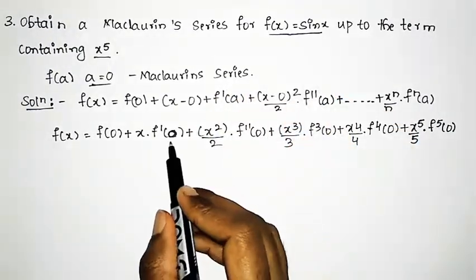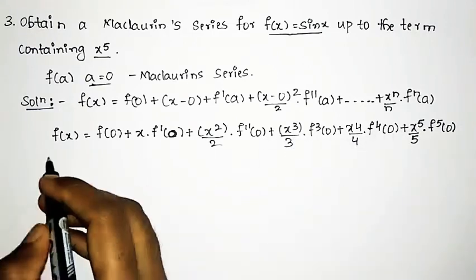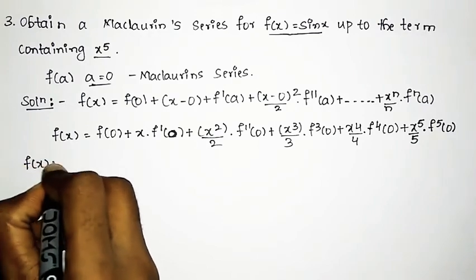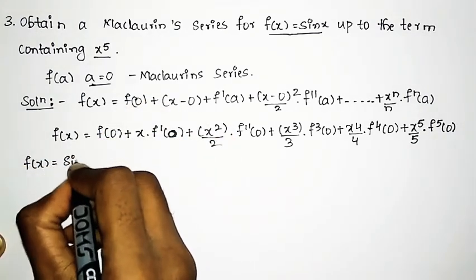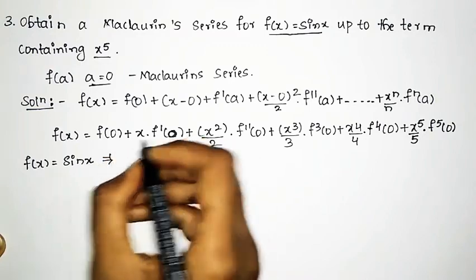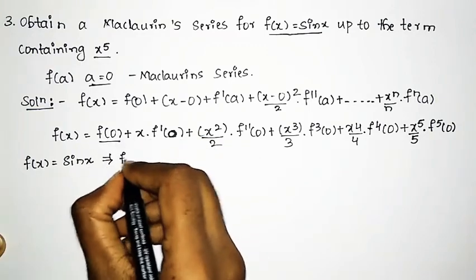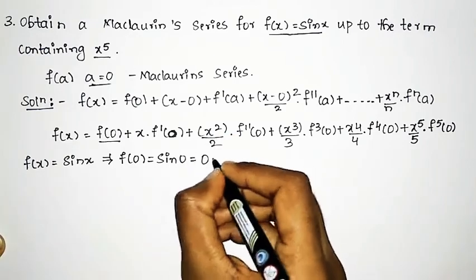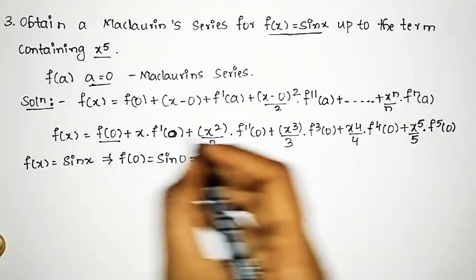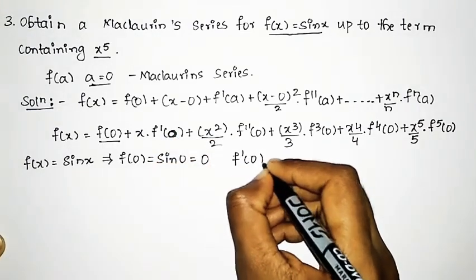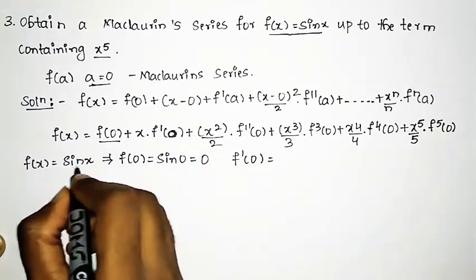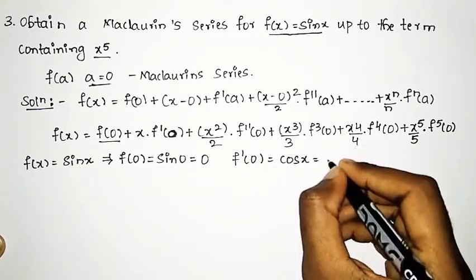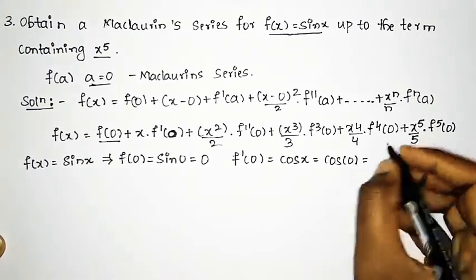We shall find all the derivative values: f'(0), f''(0), and up to the fifth derivative. The given function is f(x) = sin x. So f(0) = sin 0 = 0. For f'(0): the differentiation of sin x is cos x, and substituting x = 0 gives cos 0 = 1.